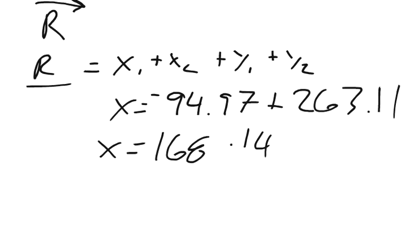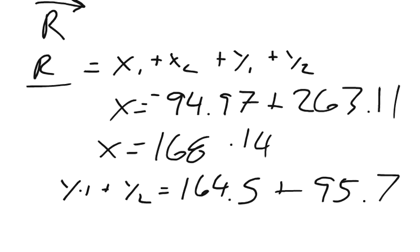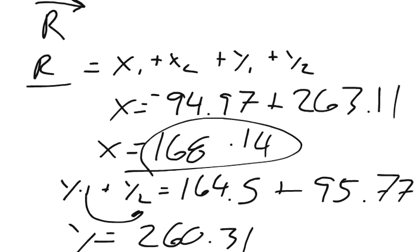And then my y1 plus y2 is 164.5 plus 95.77. And I actually flipped the 2 and the 1 around, but, so y equals, my resultant vector y is 260.31. So, now I know my x value when I end and my y value when I end.